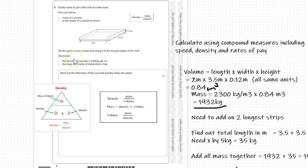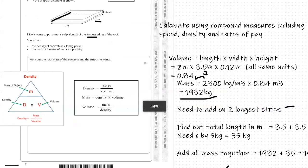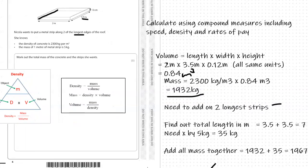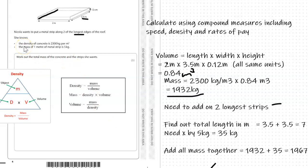Going back to the question — Nicola wants to put a metal strip along two of the longest edges of the roof. We need to add on the two longest strips. As I've underlined, the longest edges are 3.5 m — that one there and that one there — both 3.5 m. Adding those together equals 7 m. The mass of one metre of metal strip is 5 kg, so 7 times 5 gives a weight of 35 kilograms.